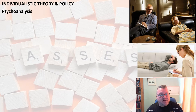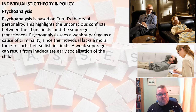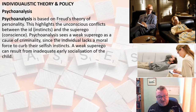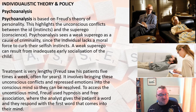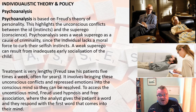Let's start with psychoanalysis, obviously based on Freud's individualistic theory. Freud saw that unconscious conflicts through the id and the superego were a cause for criminality, particularly a weak superego, because then the criminal hasn't got the moral force to curb their selfish instincts. A weak superego, Freud believed, was a result of inadequate socialisation as a child. So sometimes criminals will be prescribed psychoanalysis. Treatment is very lengthy — Freud saw his patients five times a week, often for years. Psychoanalysis involves bringing unconscious conflicts and repressed emotions up from the unconscious mind into the conscious mind so they can be dealt with and resolved.